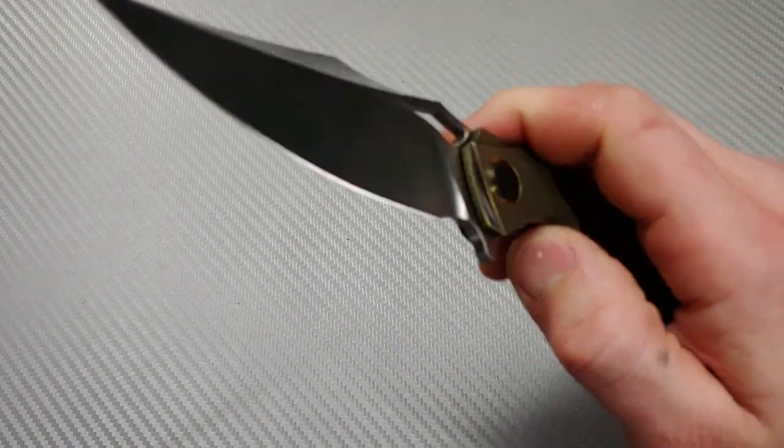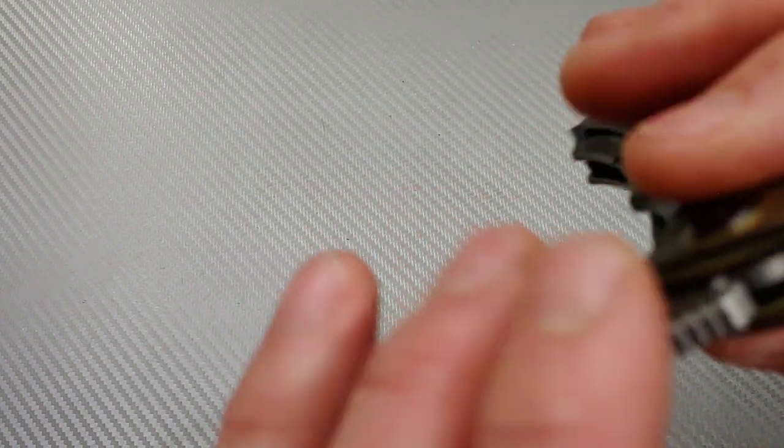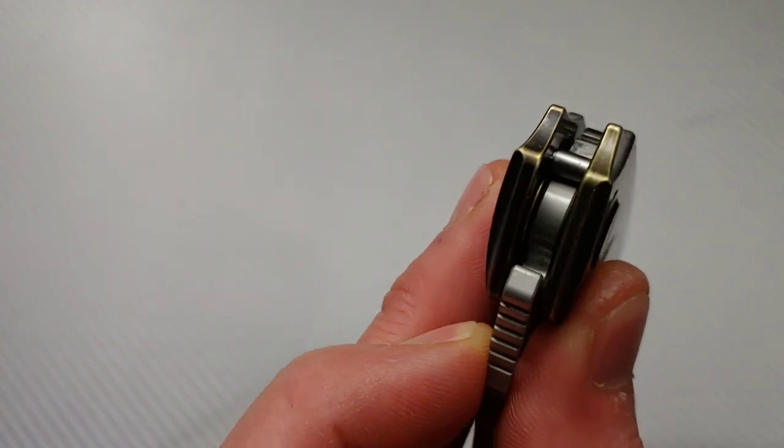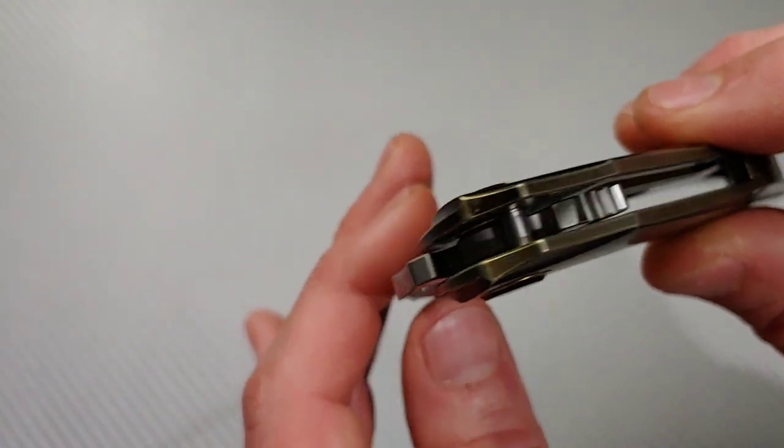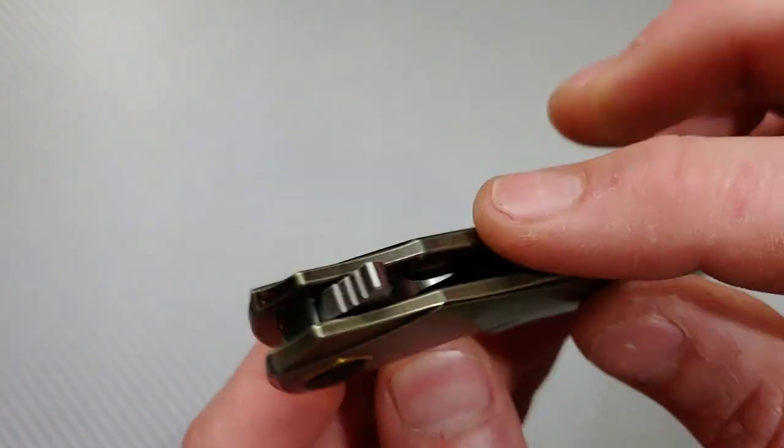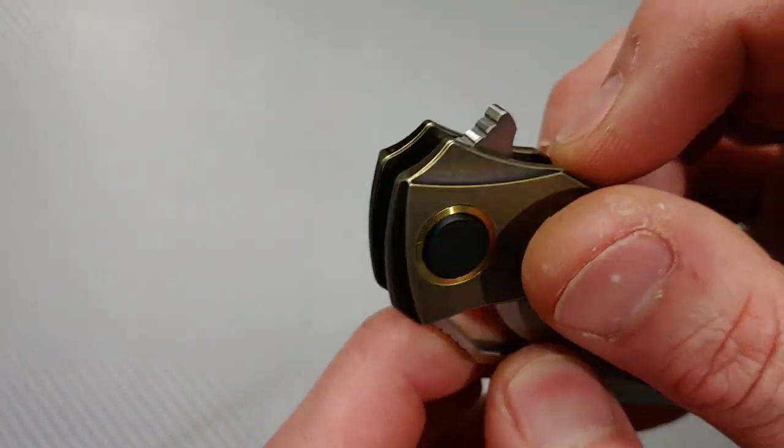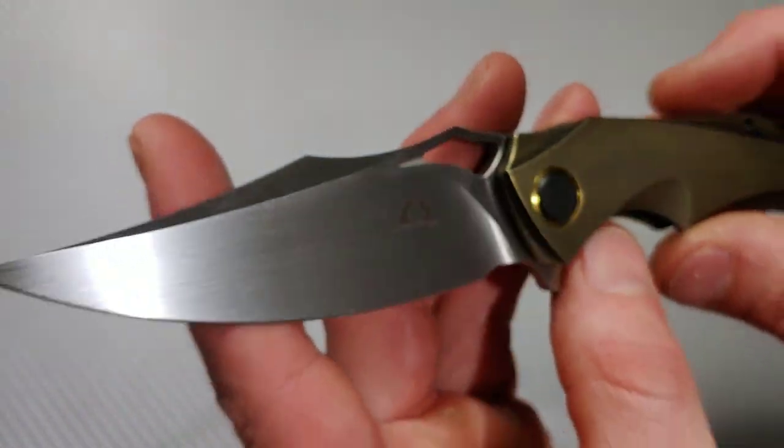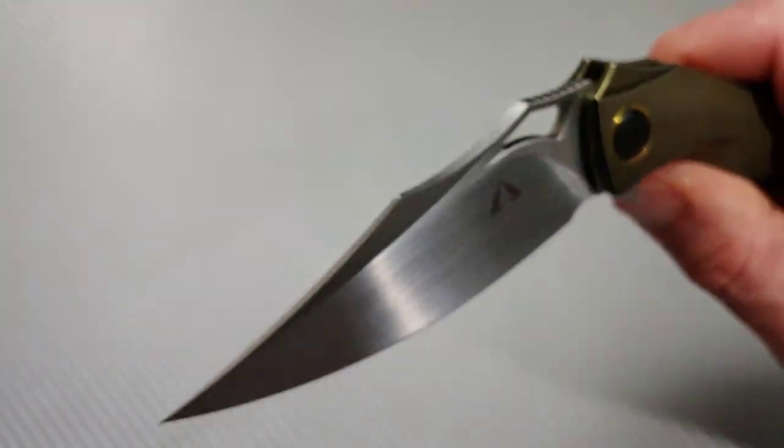Nice access to the lock bar. Let me check that stop pin. Oh, nice size stop pin. Look at that, stop pin's shouldered and it's a good size. The closing is in a good spot. Nice jimping on the flipper tab. So there you guys go. Let's see how this thing winds up turning out.